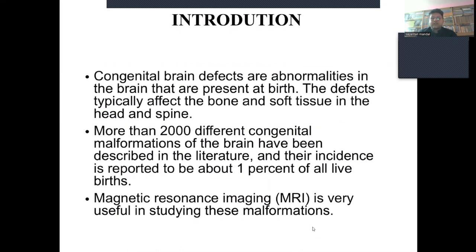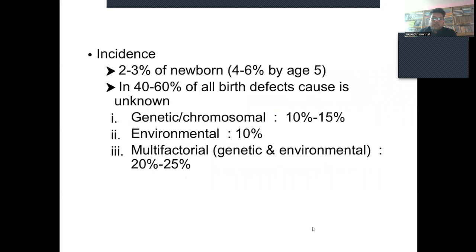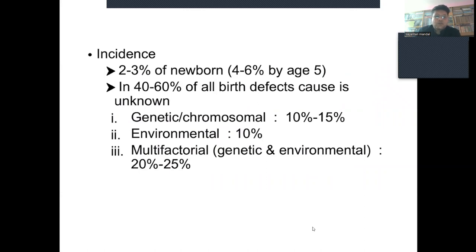Magnetic resonance imaging (MRI) is very useful in studying these malformations. Coming to the incidence, 2-3% of newborns manifest congenital deformations of the brain and spine, which increases up to 4-6% by the age of 5. In 40-60% of all birth defects, the cause is usually unknown. However, 10-15% of cases can be attributed to genetic or chromosomal abnormalities, 10% to environmental factors, and 20-25% to a combination of genetic and environmental causes.